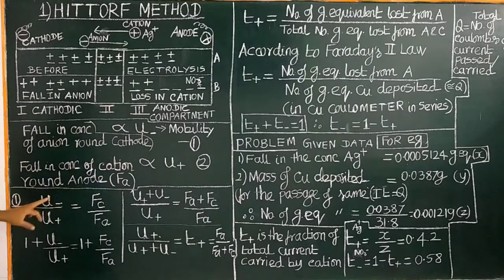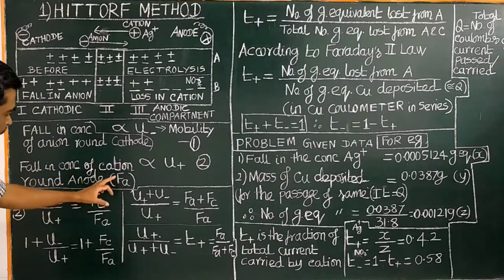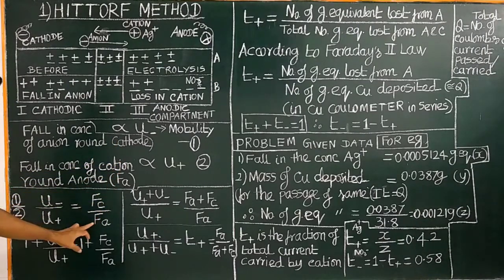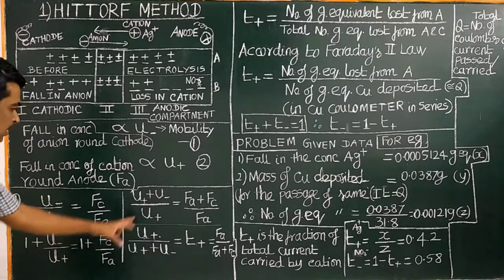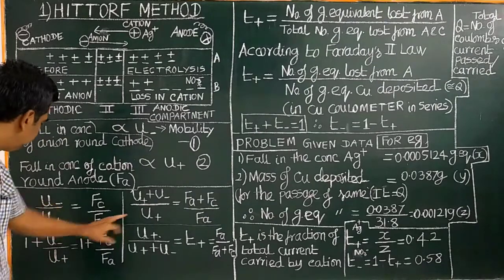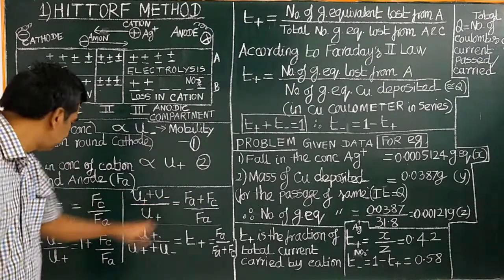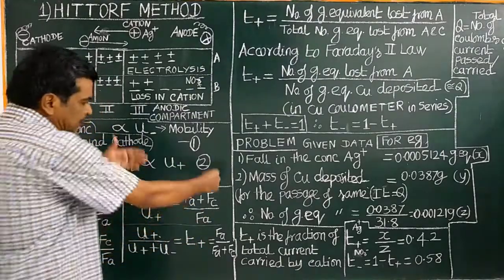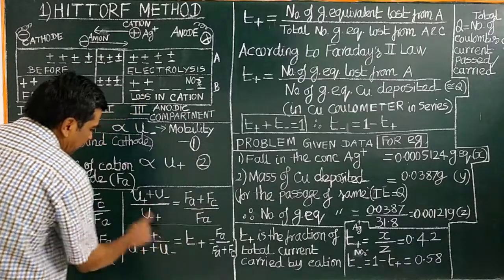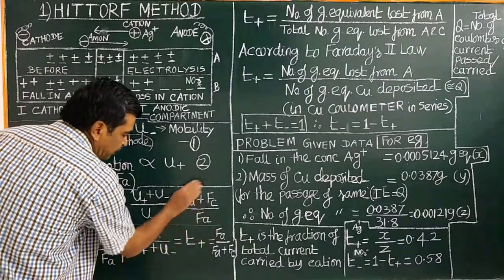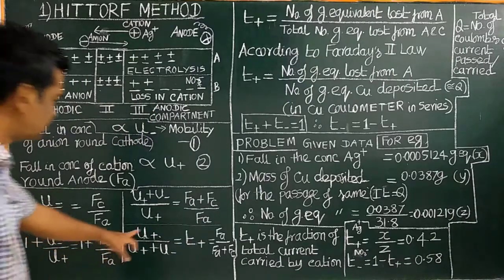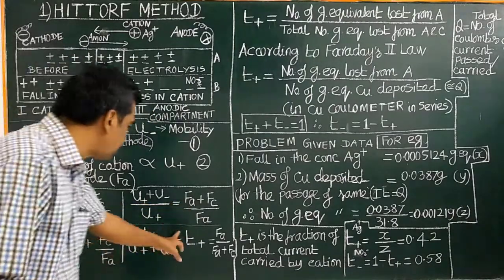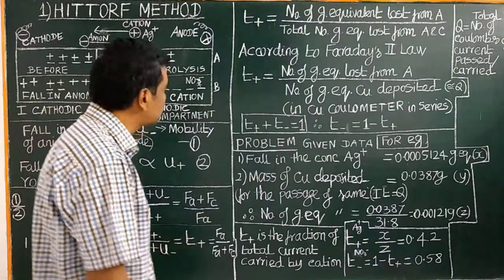Dividing equation 1 by equation 2: U− / U+ equals falling concentration around cathode divided by falling concentration around the anode. Adding 1 to both sides and cross-multiplying gives (U+ + U−) / U+ = Fc / Fc. Inverting this: U+ / (U+ + U−) equals the transport number T+. This is the relationship between transport number and ionic mobility.